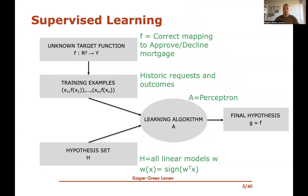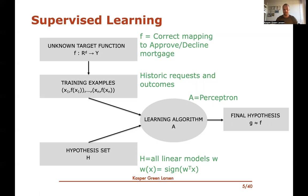Taking that back into the supervised learning setup with the mortgage example: the unknown target function maps salary and house price to approve or decline. Historic data gives us the concrete features and outcomes. The hypothesis set is all linear models w, making predictions by taking the sign of the inner product. The learning algorithm is the perceptron, which updates w until it perfectly satisfies the training data.